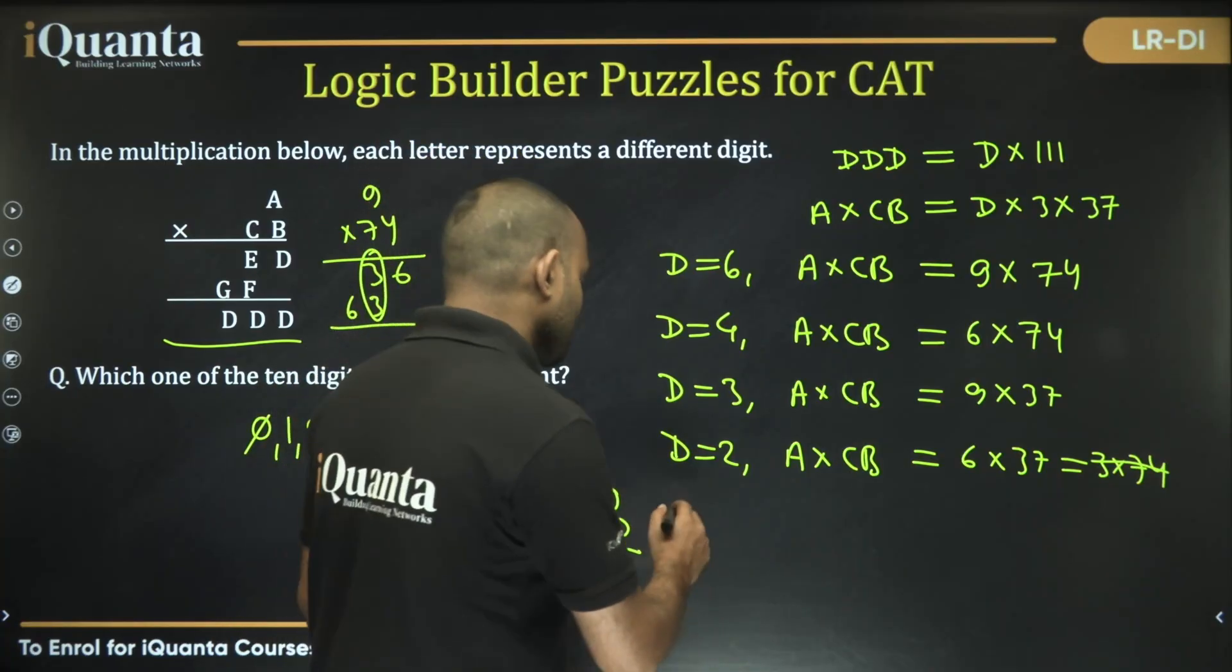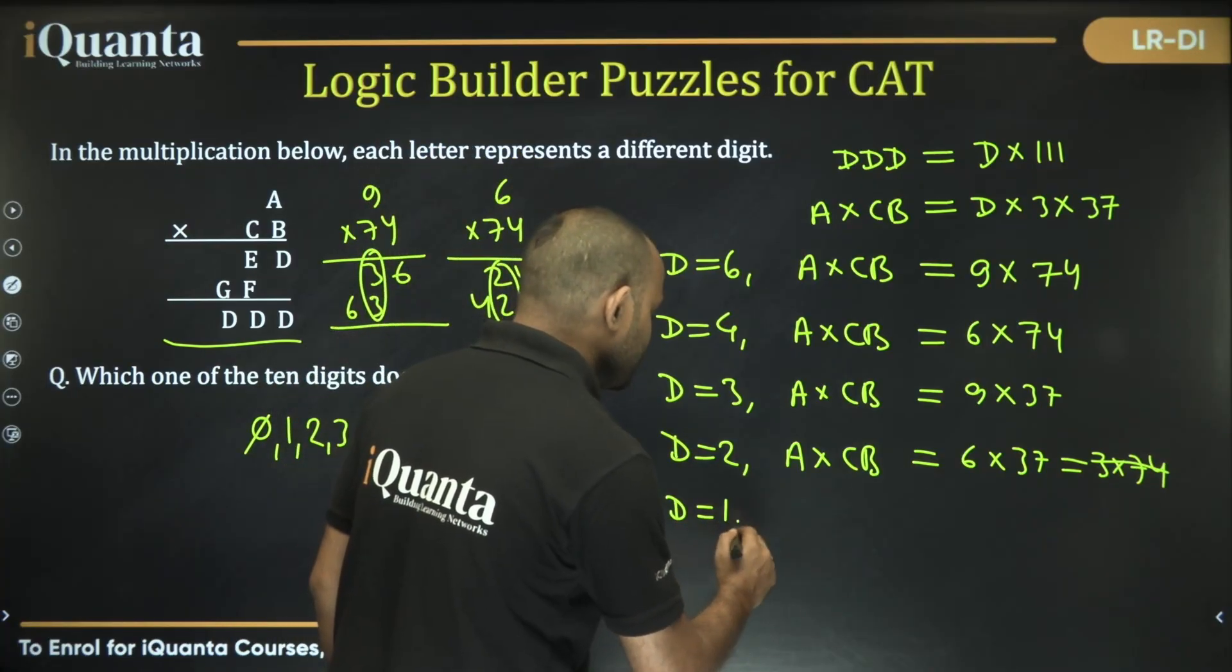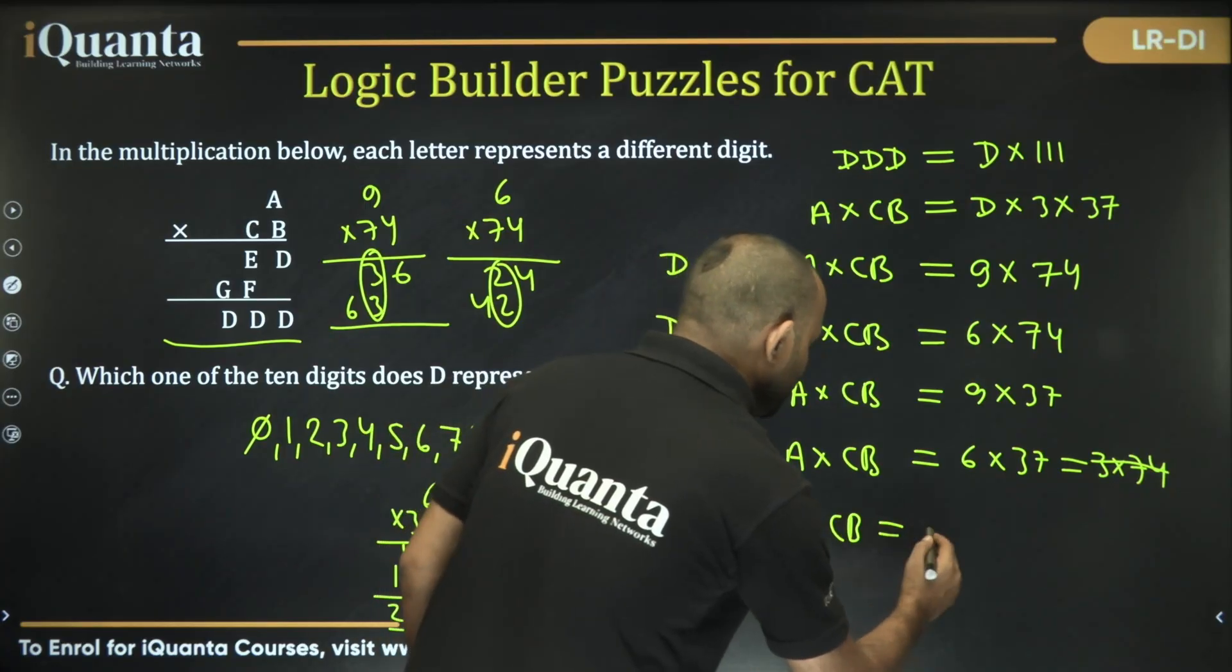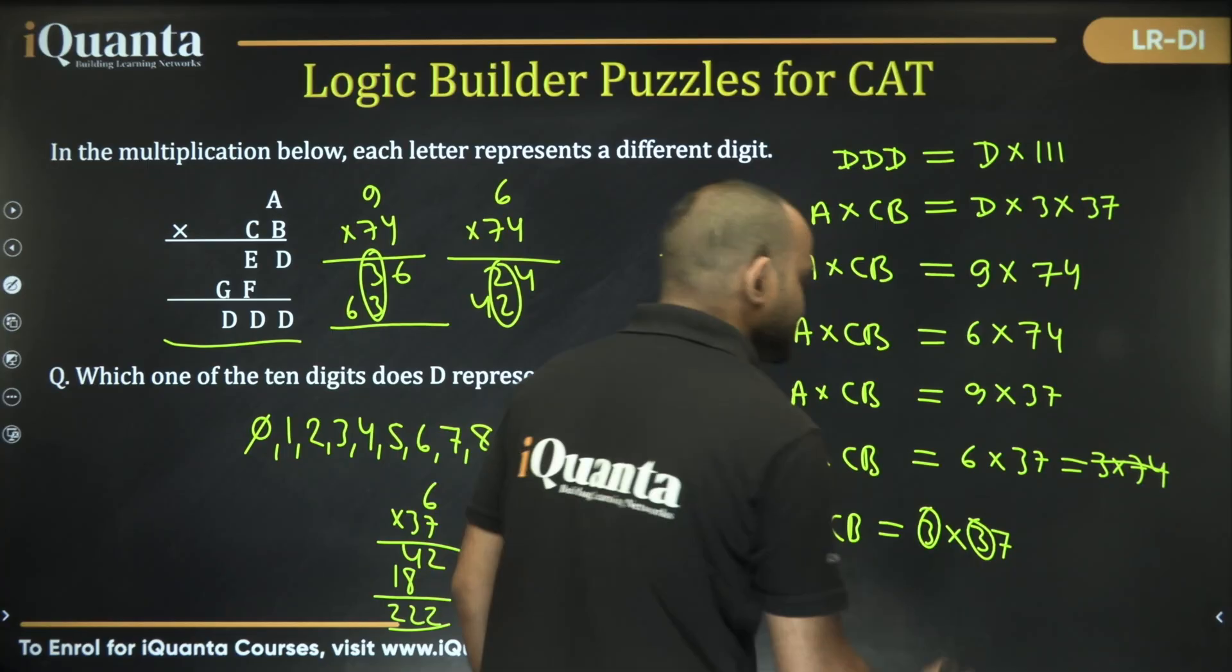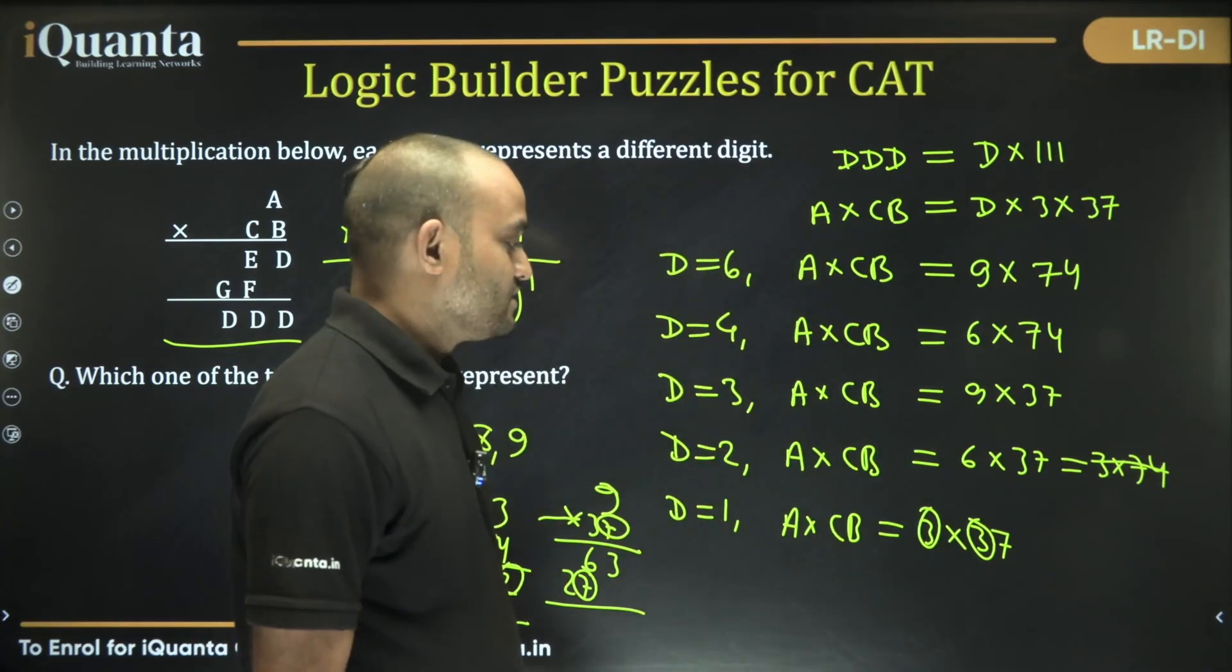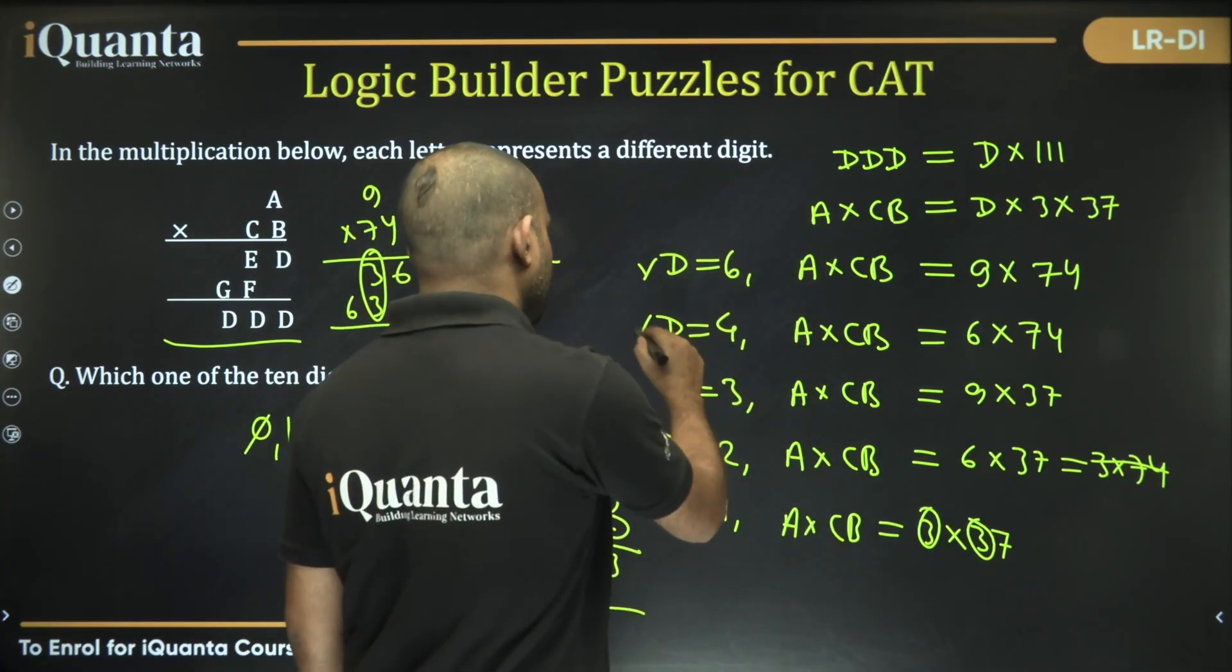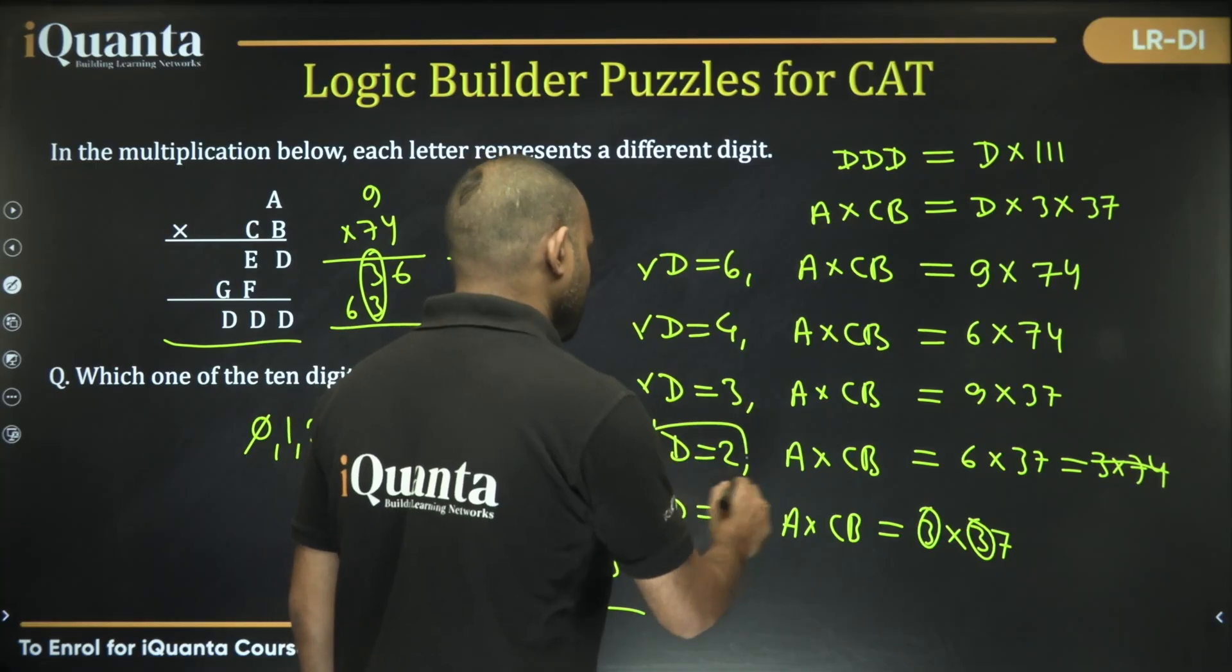Let's check for D is equal to 1 as well. If I am taking D is equal to 1, A into CB will become 3 into 37. These two digits are same, so this won't work. So none of these work except D is equal to 2.